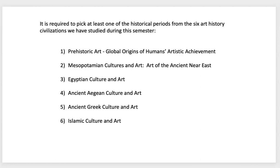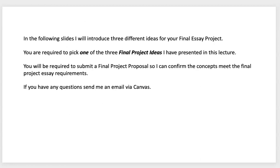The six civilizations are: prehistoric art, Mesopotamian art, Egyptian art, art of the Aegean, ancient Greek art, or ancient Islamic art. You're going to apply one of the project ideas that I have created.